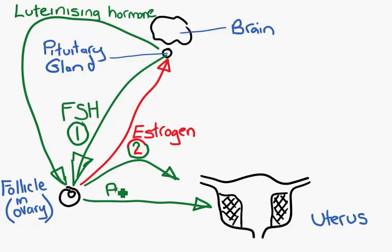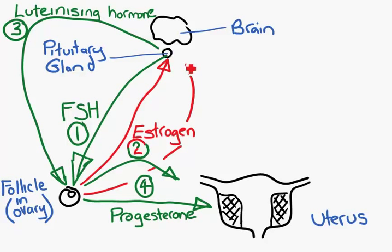Now, progesterone maintains the thickening of the uterus wall in preparation for a fertilized egg to be able to implant. So luteinizing hormone is our third hormone, and progesterone is our fourth hormone. Progesterone also has a second function, which is to tell the pituitary gland not to release any more FSH or luteinizing hormone, another negative feedback step.